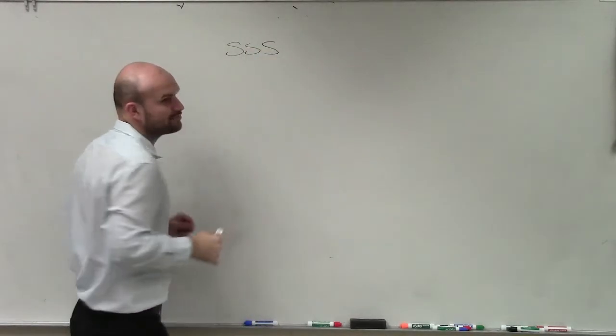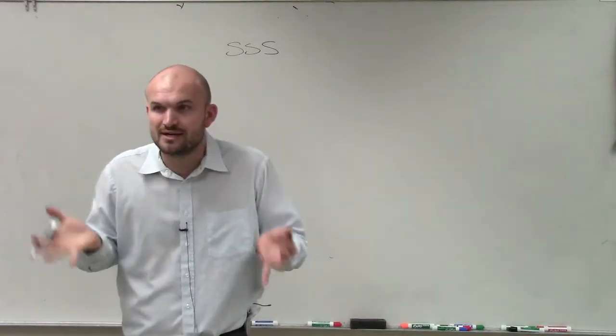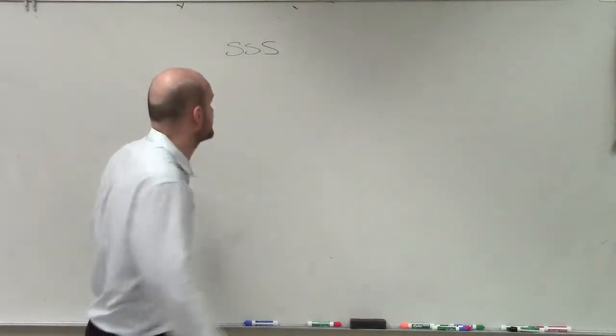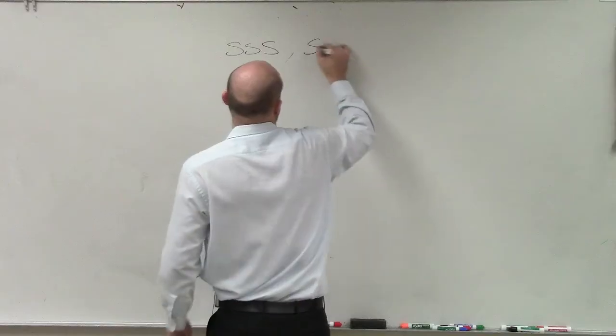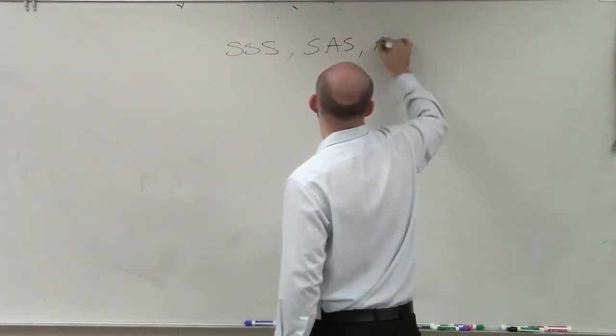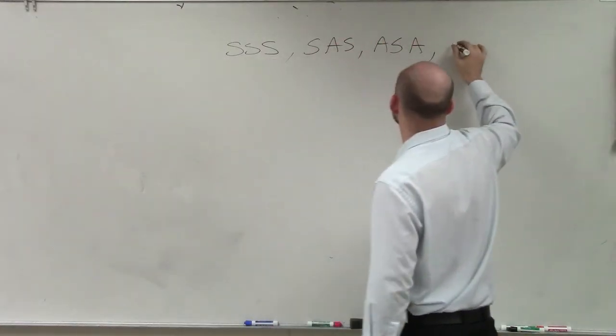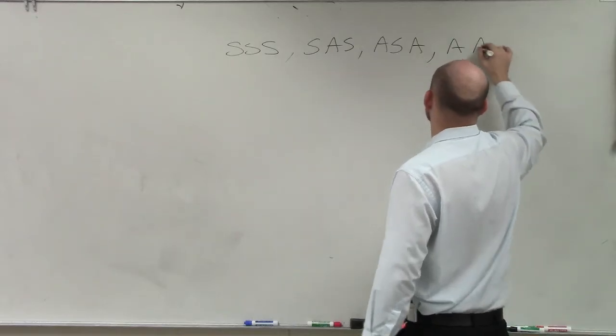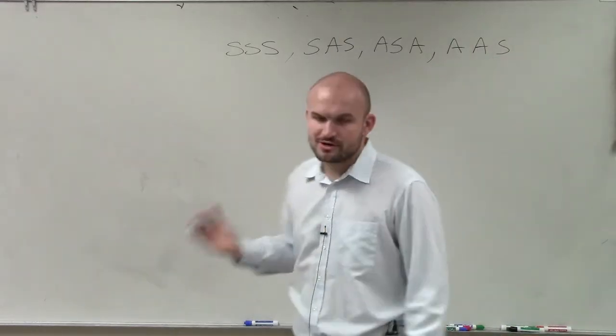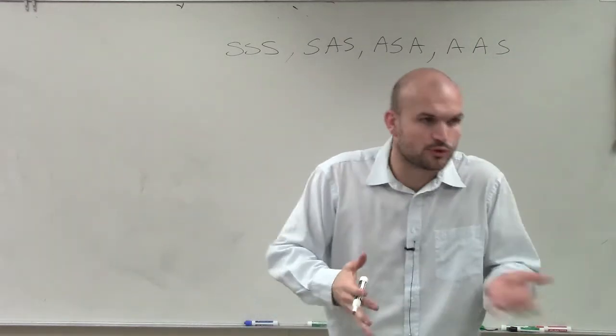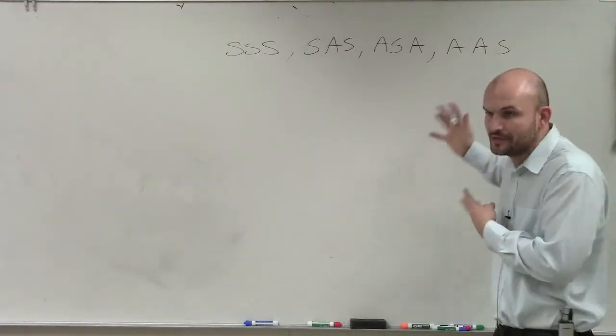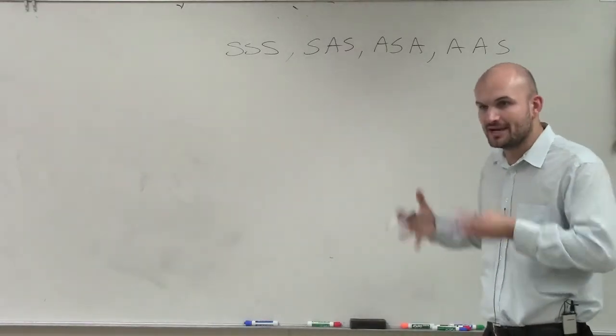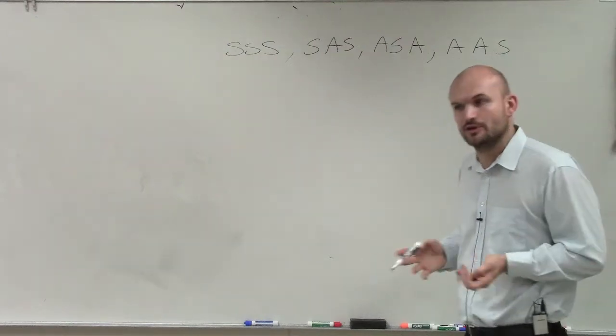This one, so far, ladies and gentlemen, we have been writing proofs, right? And I told you guys to write proofs, you have to understand angle relationships and so forth. And writing proofs, we went over these congruencies, right? So when we were trying to write proofs, we said, all right, if we can prove that we have so many sides are equal or so many angles are equal, we can prove that the triangles are congruent.